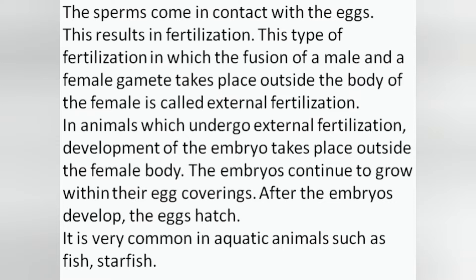This type of fertilization in which fusion of male and female gametes takes place outside the female body is called external fertilization. In animals which undergo external fertilization, development of the embryo takes place outside the female body. The embryos continue to grow within their egg coverings. After the embryos develop, the eggs hatch and the baby is born. It is very common in aquatic animals such as fish, starfish and frog.